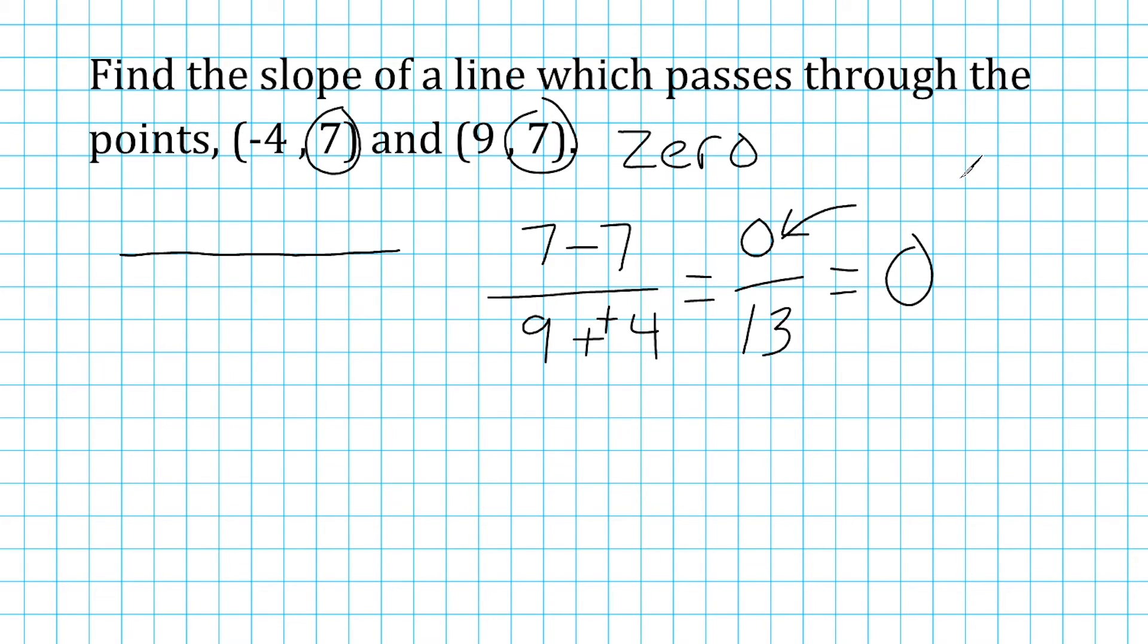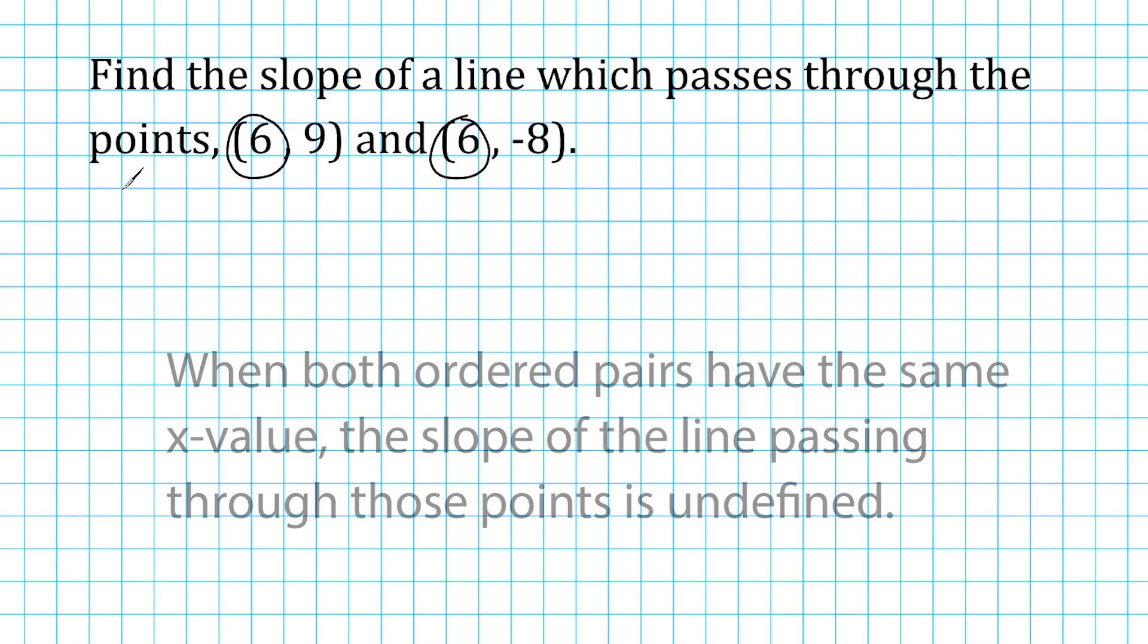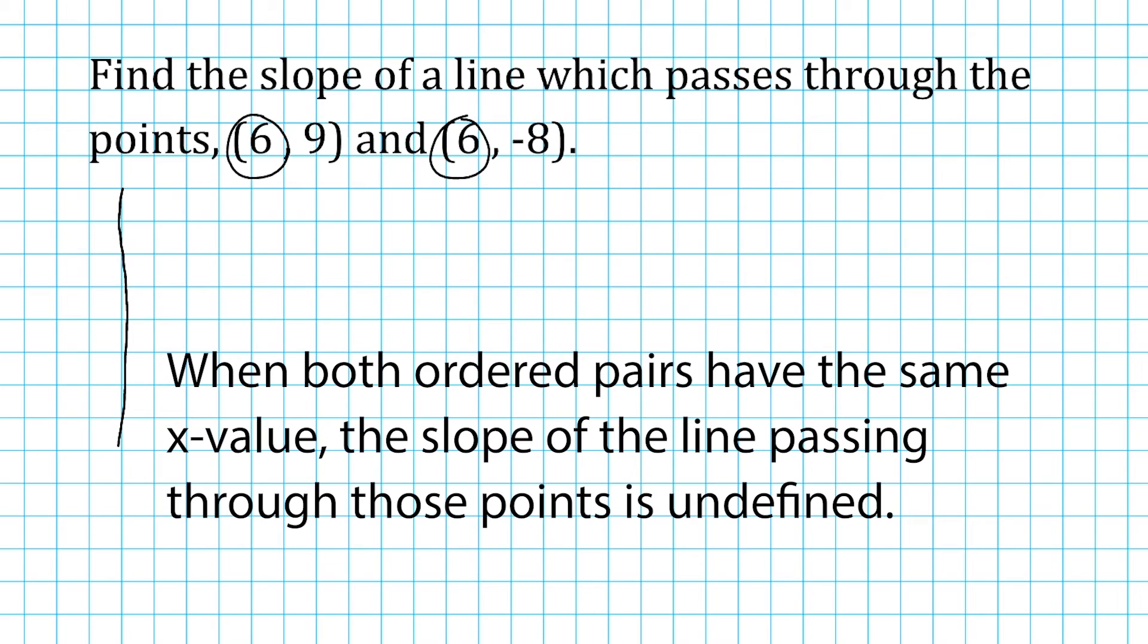Now, let's look at an example when the x values are the same. So with this example, the x values are both positive 6. Now, when this occurs, that means that our line is going to be a vertical line. And we would say that the slope of a vertical line is undefined. So when you see two points with the same x values, right away, you can just say that the answer is undefined.